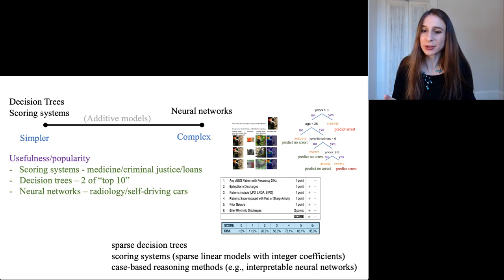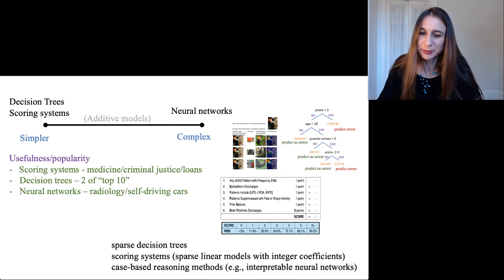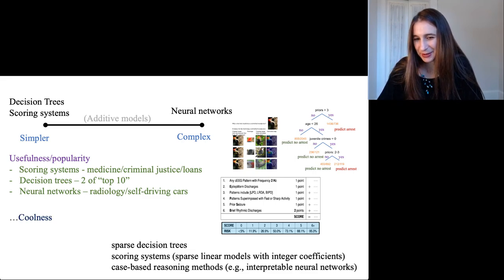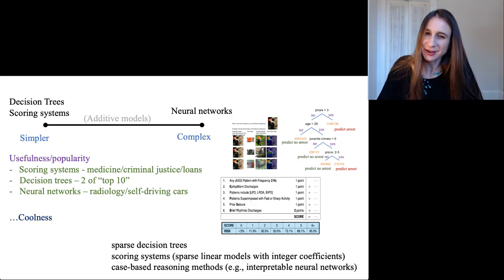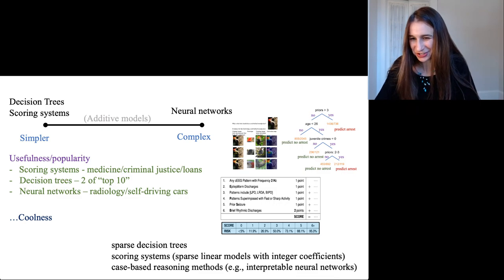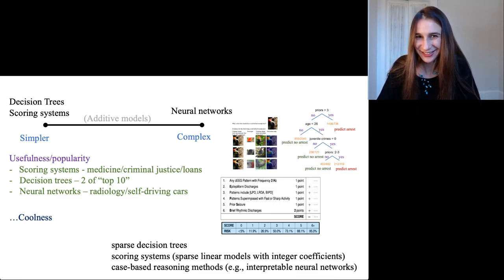Neural networks are taking over radiology and also self-driving cars, so they're used for high stakes decisions and we really want them to be interpretable too. And of course, the last reason I'm talking about these three topics is because they are just super cool and there's a lot of things about these topics that you may not know if you haven't been following the latest literature. That's why I'm going to talk about these three topics. Thank you.